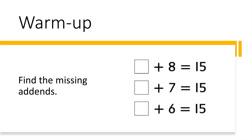Let's start with a little warm-up. Find the missing addends. We have a number sentence: blank plus eight equals 15. What number do we need to add here so that when we put eight more, it equals 15? Go ahead, think about it. Write it down on your paper.